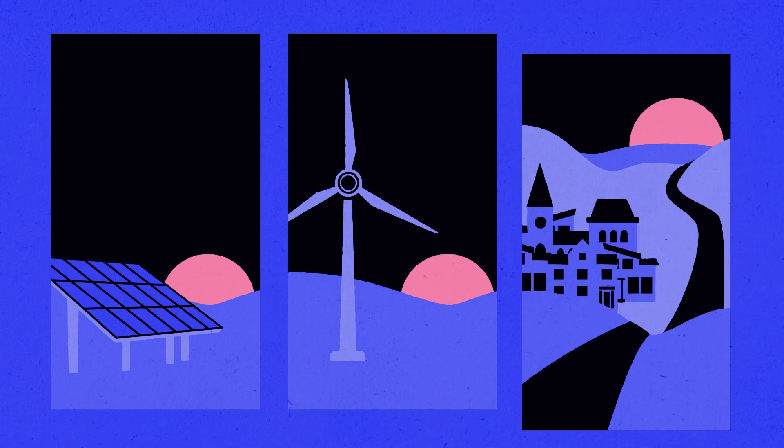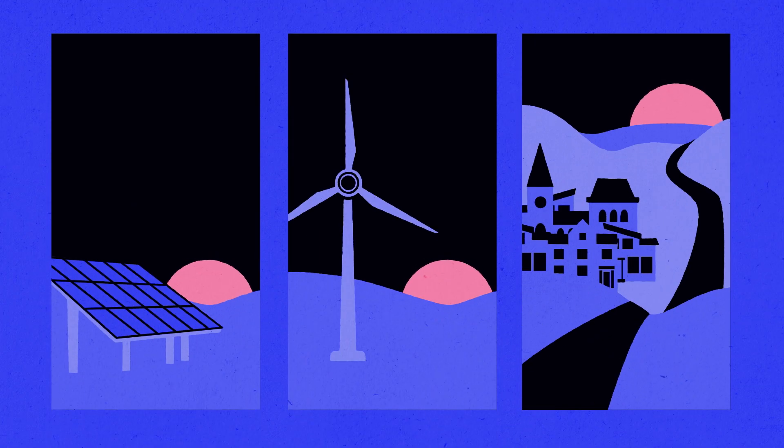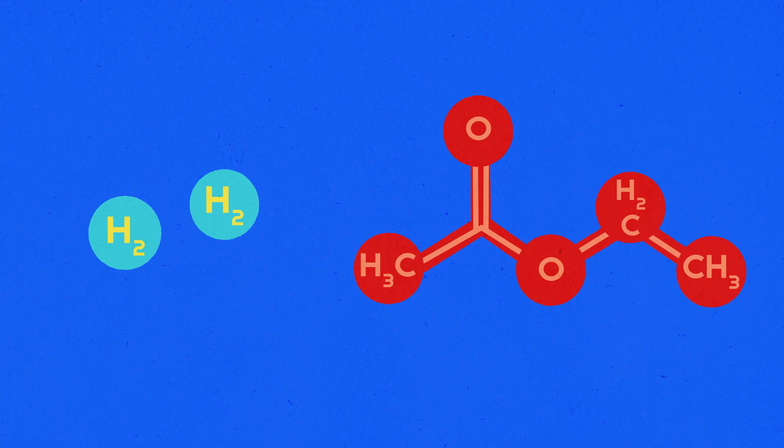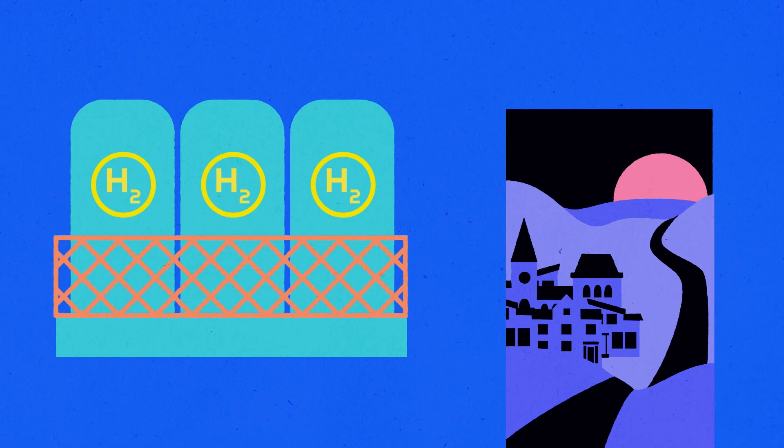Then, whenever we need the energy, say in the winter when it gets dark very early, the catalyst can remove the hydrogen, which can then be used as a carbon-free energy source.